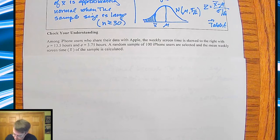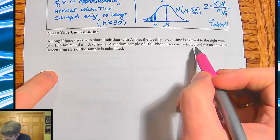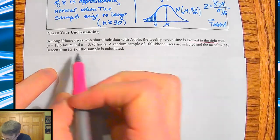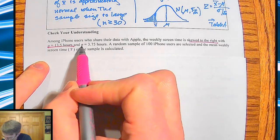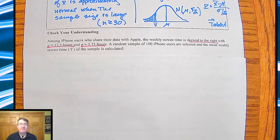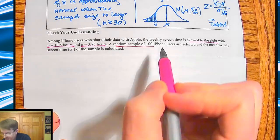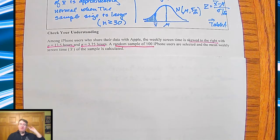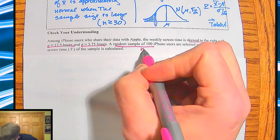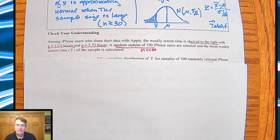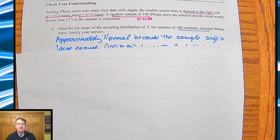All right. So for the first question, we have up here things to note. It's skewed to the right. We have a mean of 13.5. We have a standard deviation of 3.75 hours. That's the population. So those are going to be our parameters. We have a random sample of 100 iPhone users. So that is going to be our n.